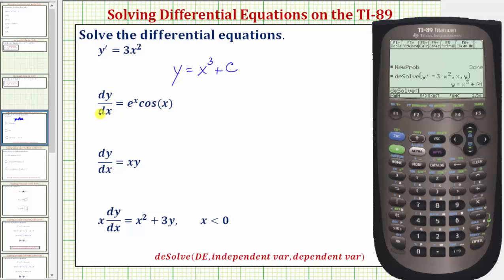We enter dy dx is y prime. So y, second, equal sign, and then equals. E to the x is diamond x. Then we enter the exponent of x, close parenthesis. Cosine x, which is second z, x, close parenthesis, comma, x, comma, y, close parenthesis, and enter.